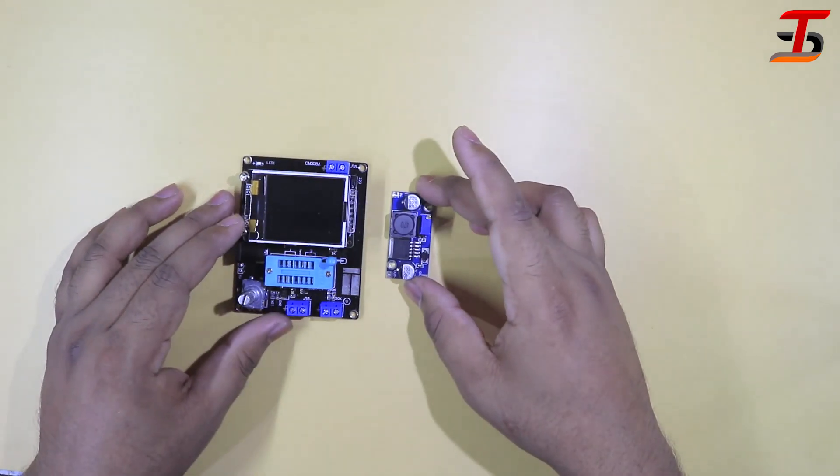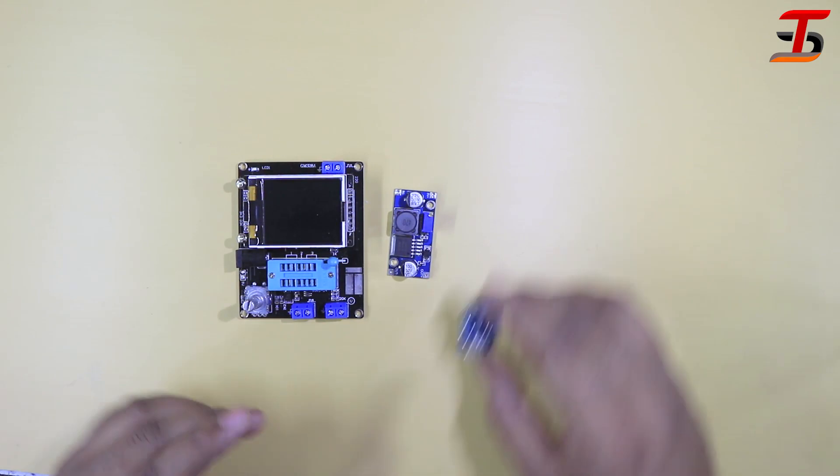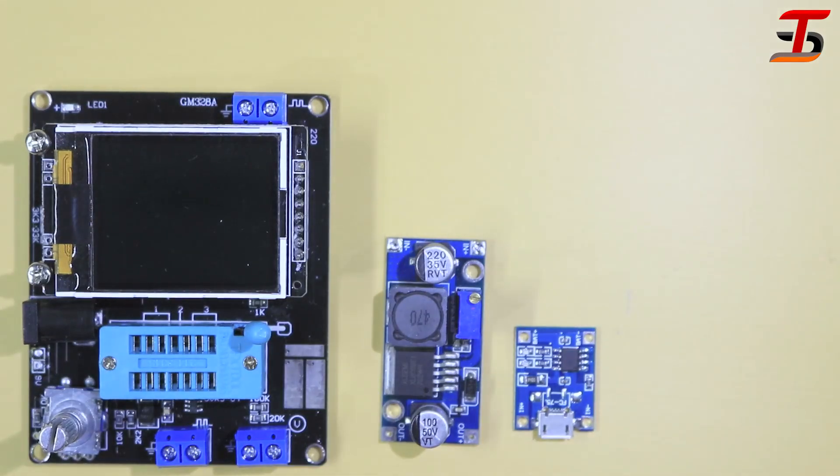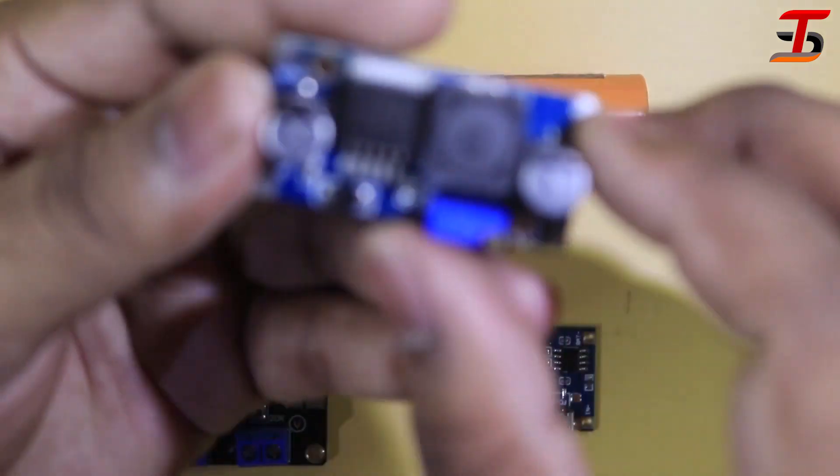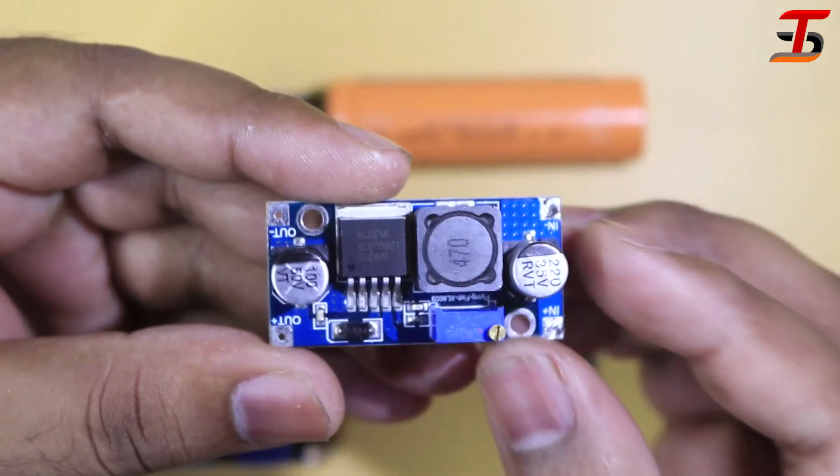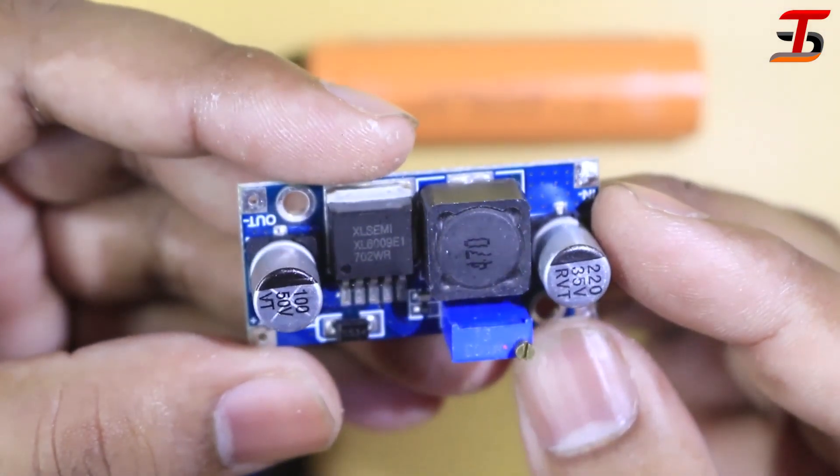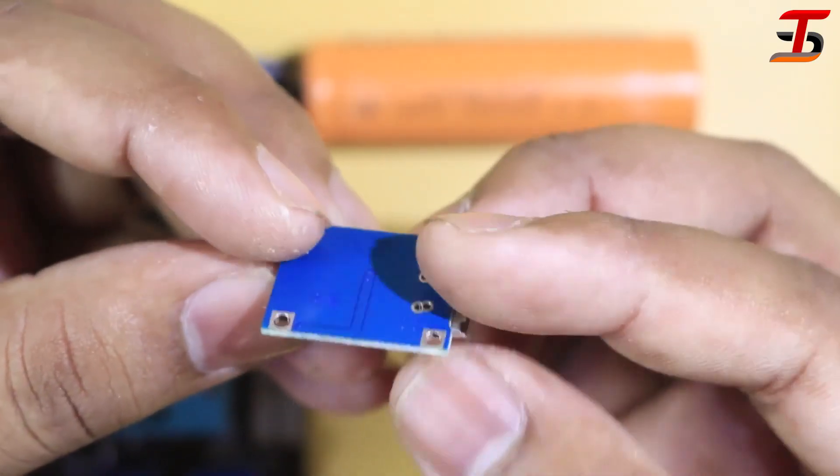I want to make this as a rechargeable. These materials are needed to make it. It's a DC to DC step up boost converter. 9 volt is required to run the circuit and need a charging module.